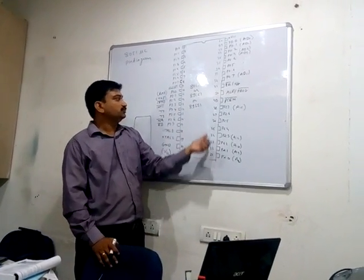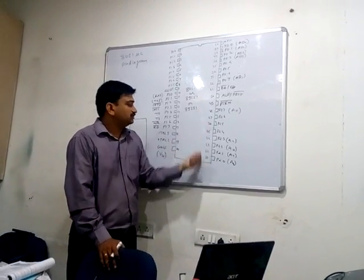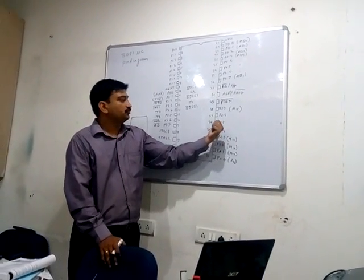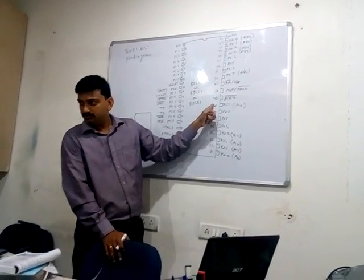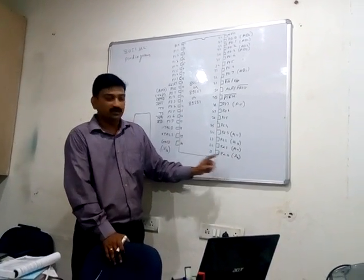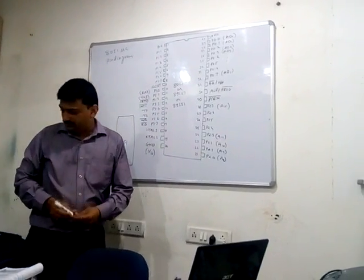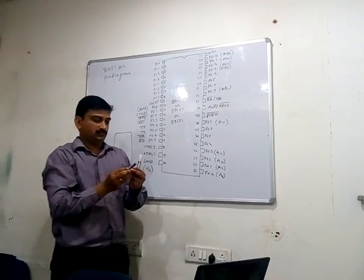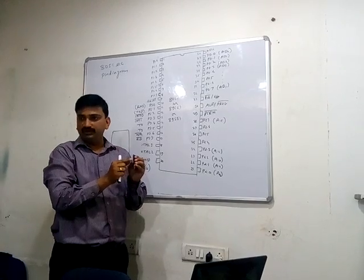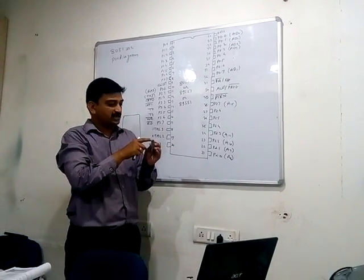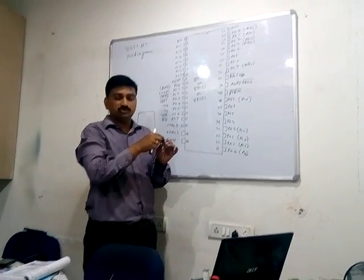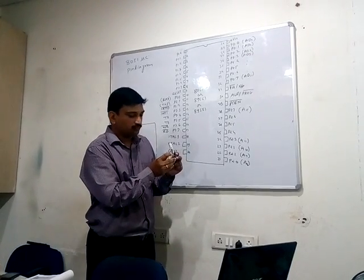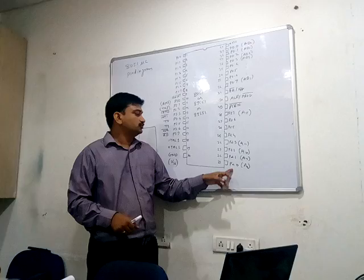Pin numbers 21 to 28 correspond to Port 2 — P2.0 through P2.7. When working with a physical microcontroller, locating pins can be difficult during troubleshooting. Using the notch as a reference, Port 1 is here, Port 3 is next, then Port 2, and then Port 0. Since P2.0 starts from a known position, it is easy to count P2.0 through P2.7 sequentially.